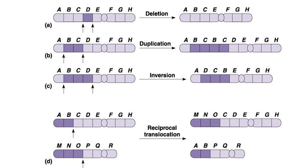The next chromosomal mutation type is duplication. In this case you have a normal strand A to H, but after replication the chromosome has A, B, C, B, C, and then the rest normal. So B and C were duplicated.